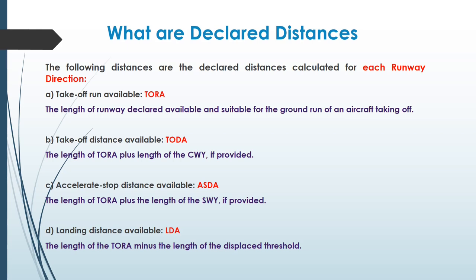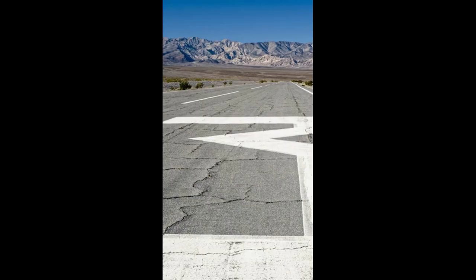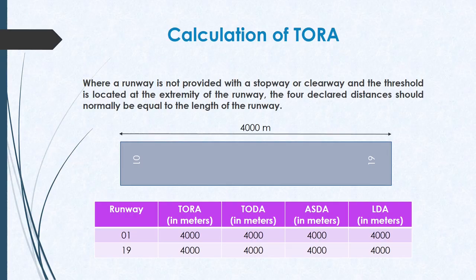If the threshold is displaced by a certain distance, we subtract that length from TORA to get the LDA. The threshold can be displaced mainly due to three reasons: when there are obstacles on the approach, when the pavement strength is not sufficient to bear the load of the aircraft, and third, when there are noise abatement procedures in place.